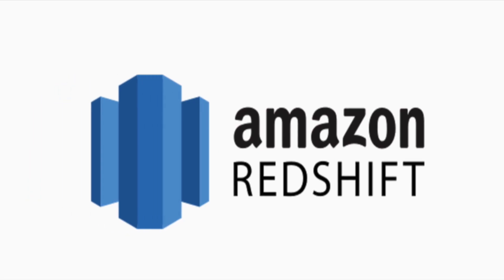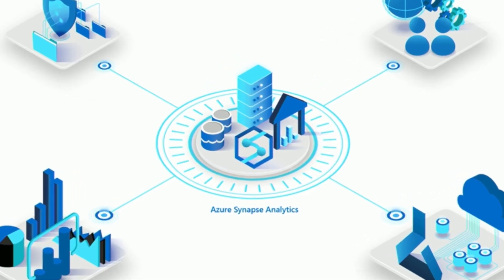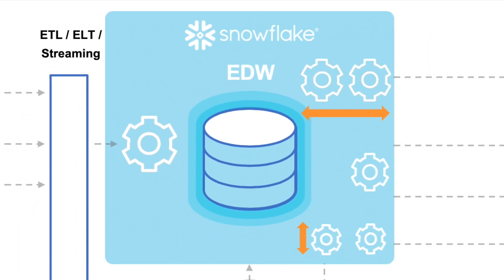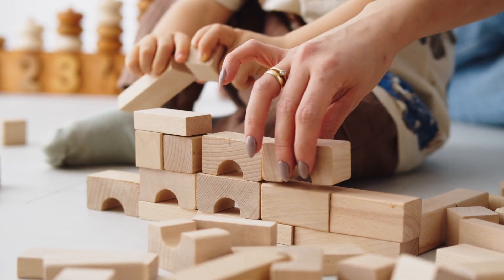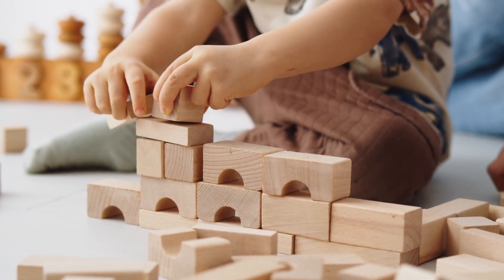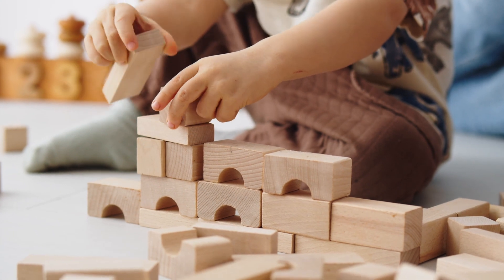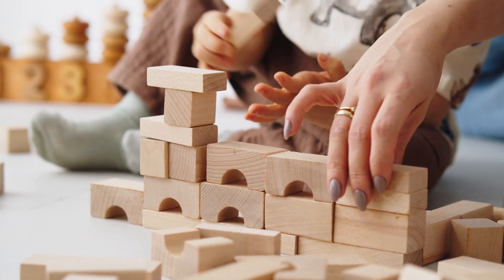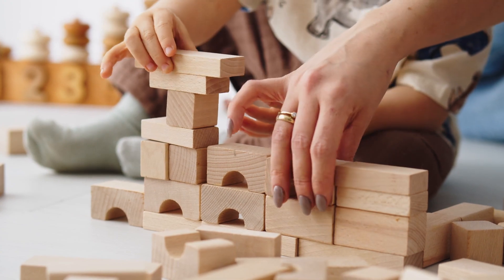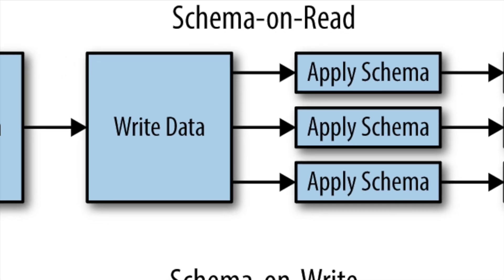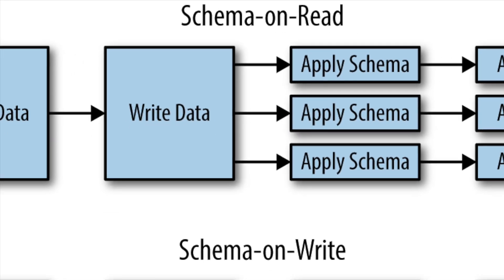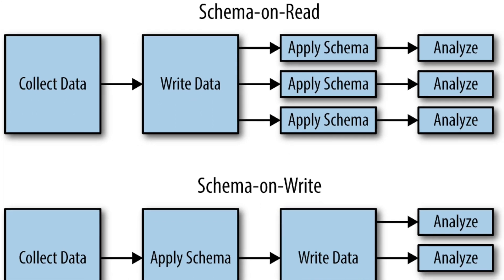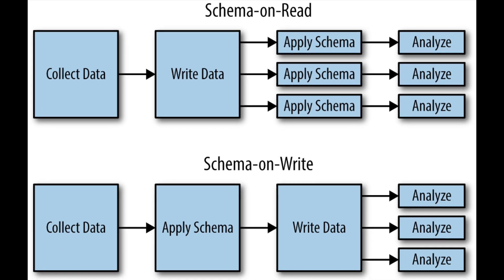Examples of data warehouses include Amazon Redshift, Azure Synapse, Google BigQuery, and Snowflake. On the other hand, a data lake is an unstructured or semi-structured repository of data that is stored in its raw form. Unlike data warehouses, data lakes do not require any predefined schema. They are designed with a schema-on-read approach, which means that data is only modeled and organized when it is accessed.